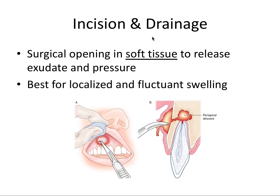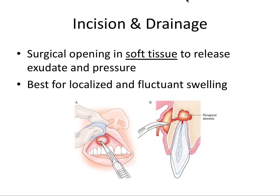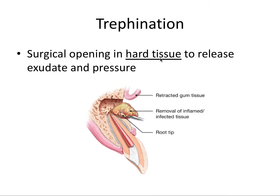Incision and drainage is done in soft tissue. There's a very similar procedure called trephination, where a surgical opening is made into hard tissue — into bone — again to release exudate and pressure. For the board exams, remember: incision and drainage pertains to soft tissue, whereas trephination involves drilling into bone. Same process, just in hard tissue.